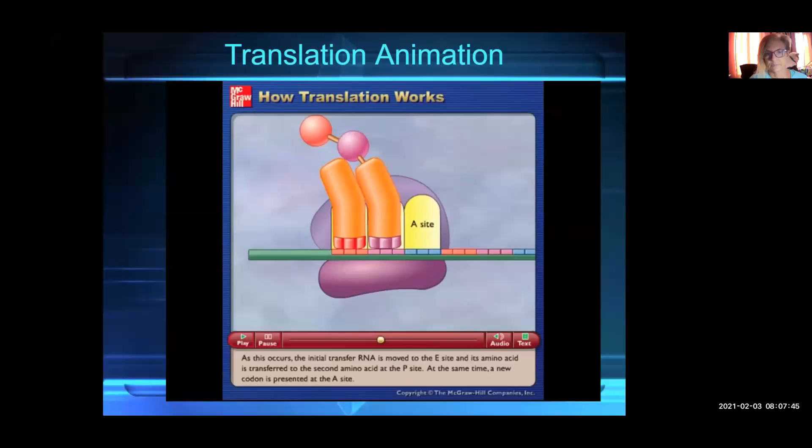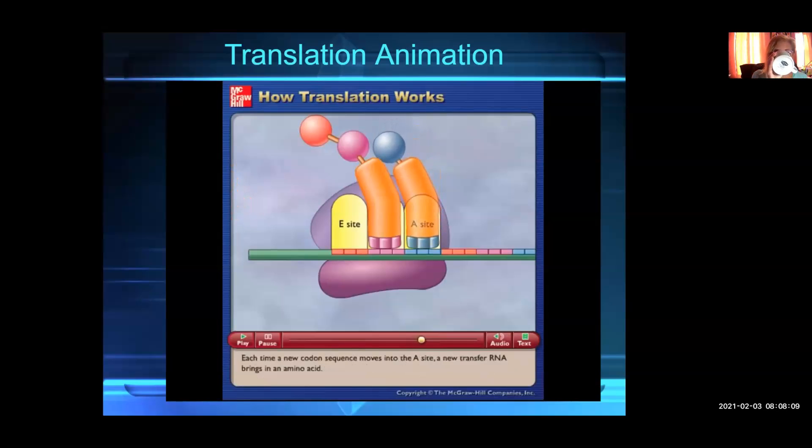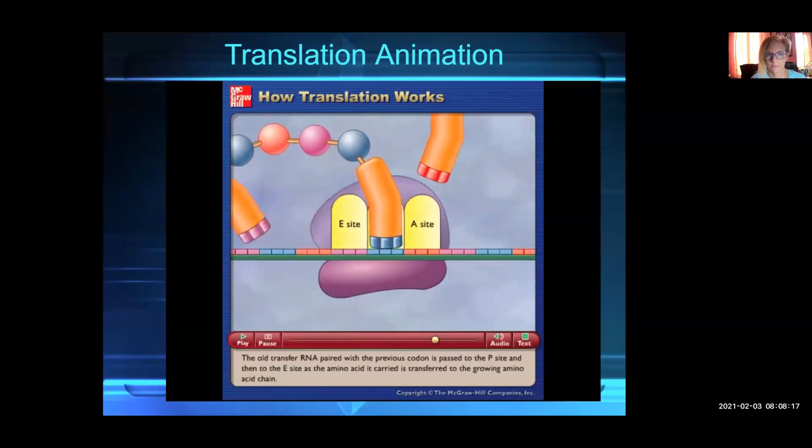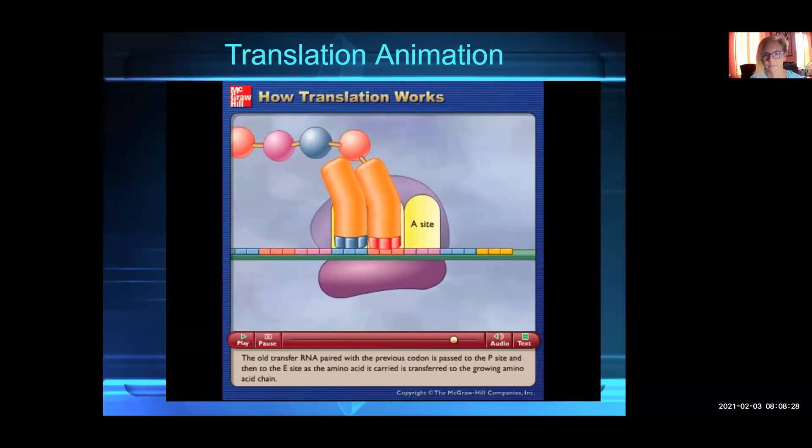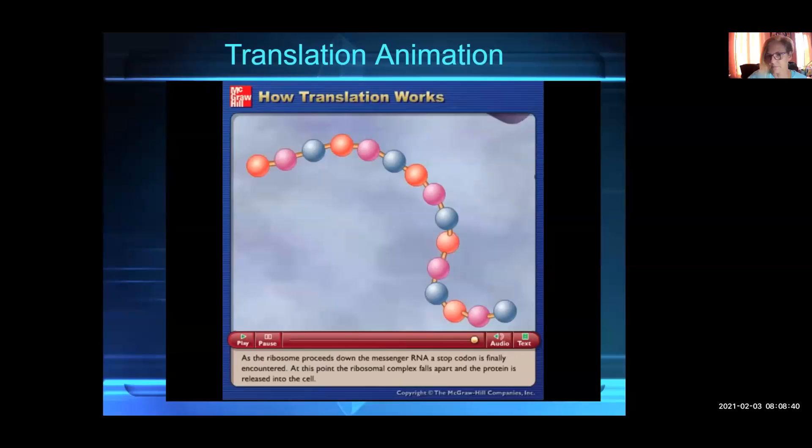The complementary matching of three nucleotides on the transfer RNA, called the anticodon, and three nucleotides on the messenger RNA, called the codon, ensures the correct sequence of amino acids. The messenger RNA passes along the ribosome in short spurts of three nucleotides at a time. As this occurs, the initial transfer RNA is moved to the E site and its amino acid is transferred to the second amino acid at the P site. At the same time, a new codon is presented at the A site. The initiating transfer RNA, which now no longer carries an amino acid, leaves the E site, and the next transfer RNA with a complementary anticodon enters the A site.